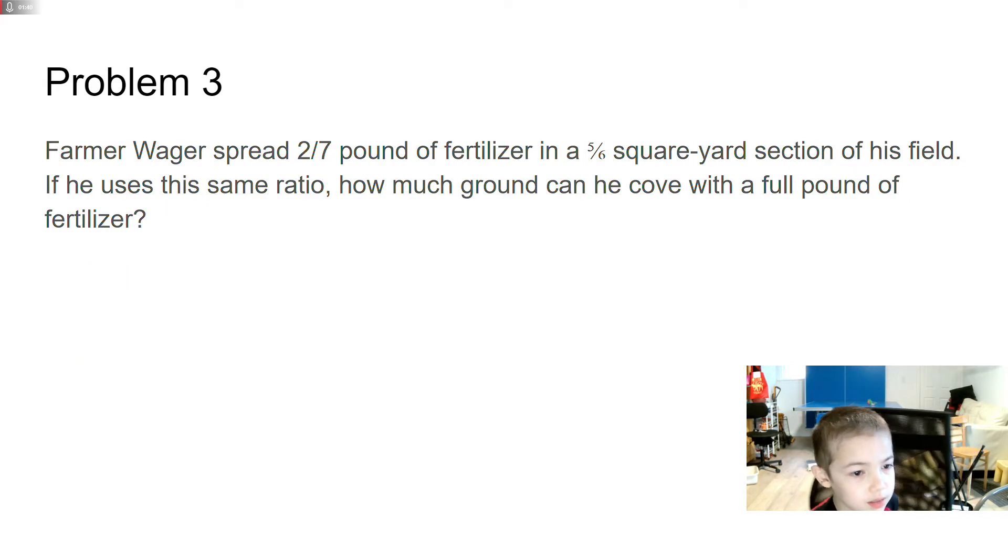Problem 3. Farmer Wager spread 2 over 7 pound of fertilizer in a 5 over 6 square-yard section of his field. If he uses the same ratio, how much ground can he cover with a full pound of fertilizer?